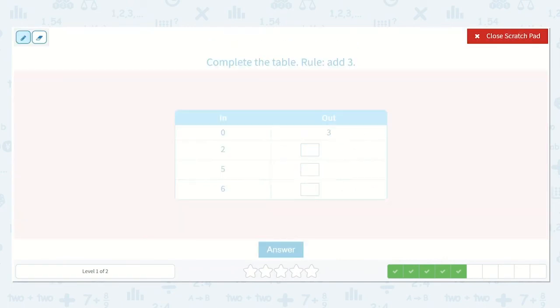All right, this time we are adding three. I can use that same method. I can draw three dots. I can say zero, one, two, three. Oh, they wrote that for us. Two, three, four, five.